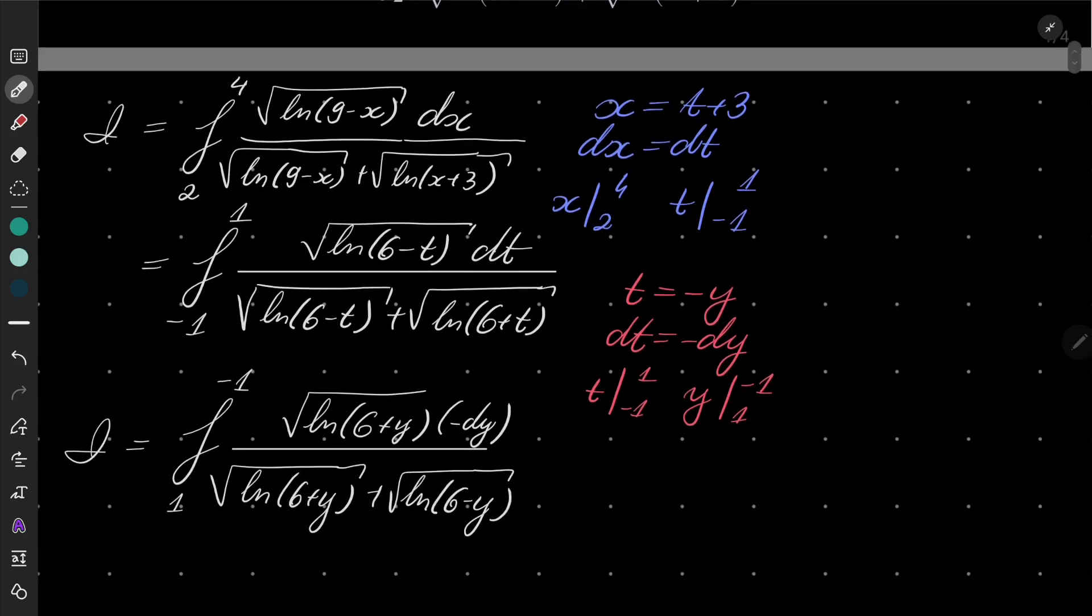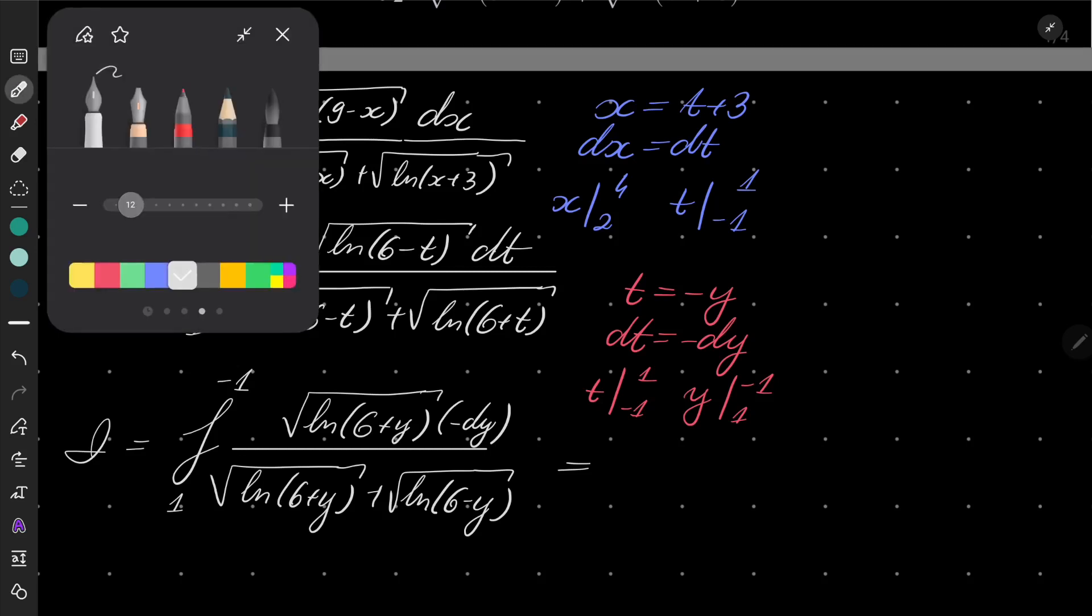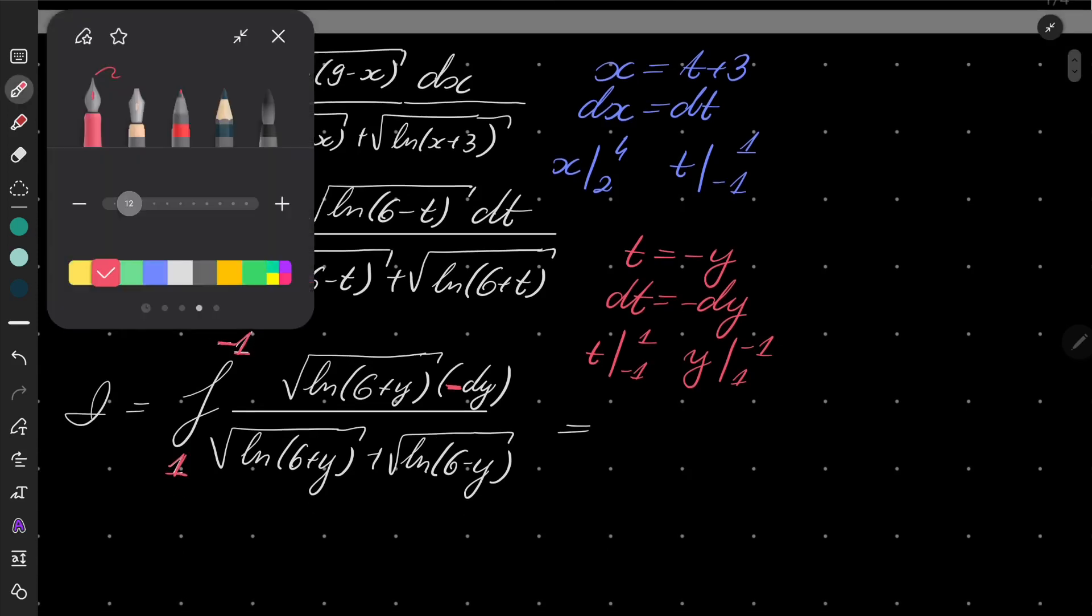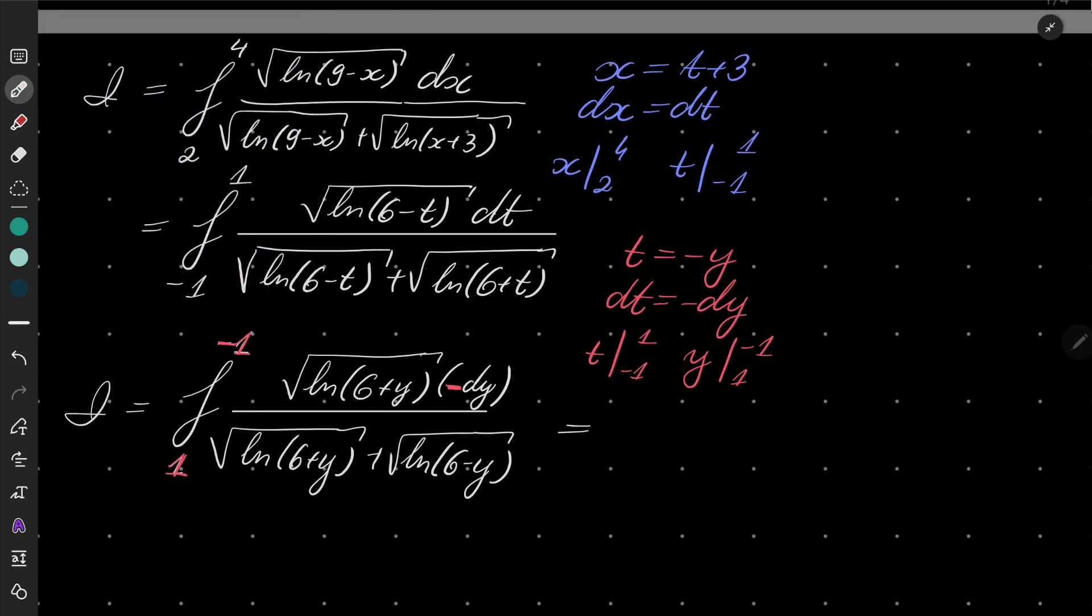Okay, very well. And now I will make two things because our integral is definite. The name of the variable doesn't really matter, so we can change back from y to t. And also we can take this minus to flip the bounds of integration to become more natural.